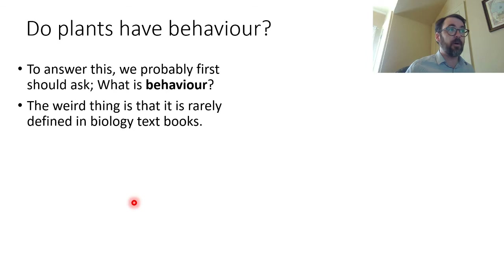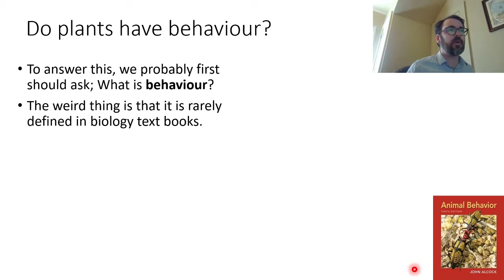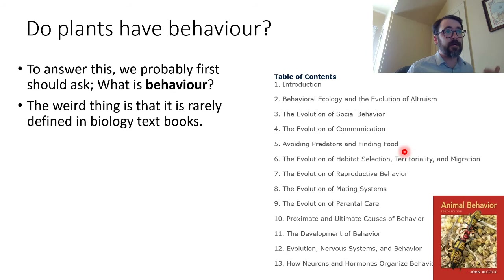Here is the animal behavior textbook I used when I was an undergraduate — it's still in print. Maybe to get a feel for whether or not plants have behavior, we could take a look at the table of contents. If we start going down the list, it turns out that plants can actually recognize kin and respond differently to kin, which is kind of amazing.